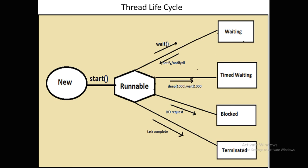The last state is Terminated — this is the last phase of the thread lifecycle. This happens when your thread has completed its task, meaning the thread's run() method has executed successfully. When you work with a thread, you initialize it, call the start() method, which then calls the run() method. Whenever the run() method completes successfully and all statements inside it are executed, the thread enters the Terminated state.